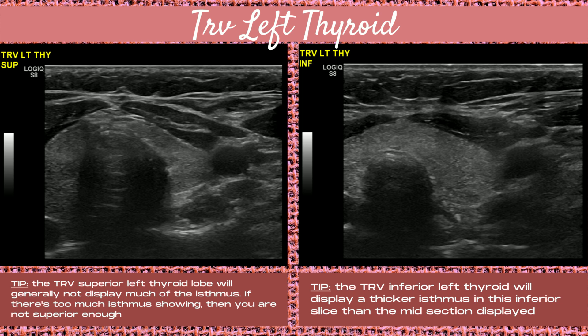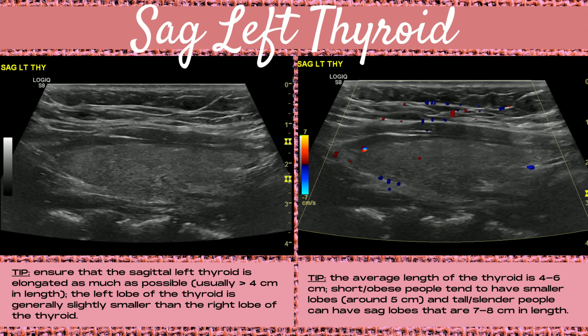For the inferior portion of the transverse left lobe, you're generally going to see a thicker isthmus than in the mid-slice. Moving on to the sagittal left thyroid — ensure it's elongated as much as possible using a sector field of view shape, and it's usually greater than four centimeters in length. The left lobe is generally slightly smaller than the right. The average length is four to six centimeters; however, short and obese people tend to have smaller lobes around five centimeters, while tall slender people can have lobes up to seven to eight centimeters. Use your patient's body habitus to gauge whether you're artificially shortening the lobe.